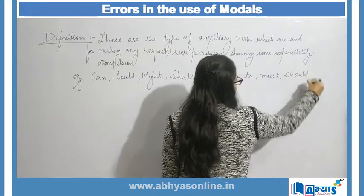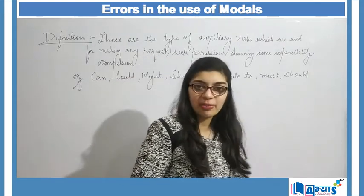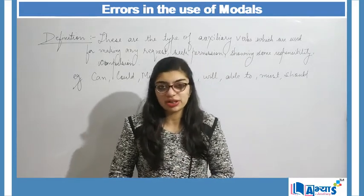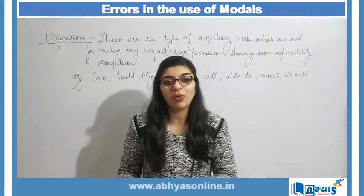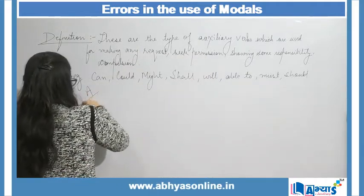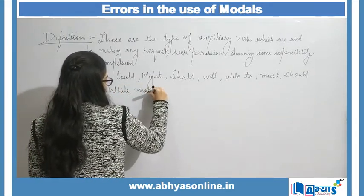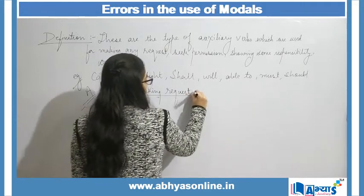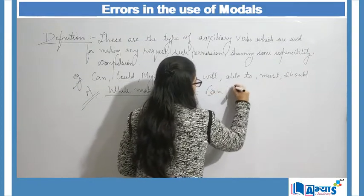Now one by one we are going to understand each type of modal, so that we are sure about what conditions each modal is used in. We will particularly focus on the conditions or criteria where each type of modal is used. The first condition is while making a request. Whenever we are making some kind of request, we will always make use of modals like 'can' or 'could'.